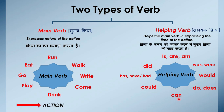Has, have aur had ka use present perfect tense aur past perfect tense ke liye ke jate hai. Do aur does ka use hum present ke liye use ke jate hai aur did ka use hum past ke liye use ke jate hai. Toho yhe hai helping verbs jho hume samay ke baare mei bataati hai, aur main verb hume action ke baare mei bataati hai. Toho yhe thi two types of verb — main verb aur helping verb.